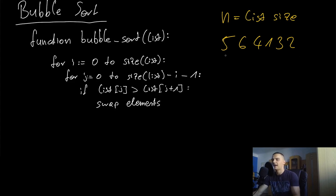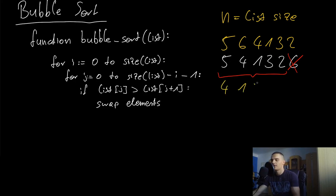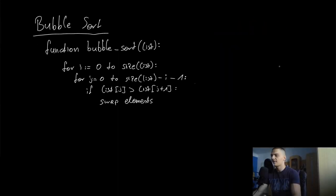Walking through the first iteration on [5, 6, 4, 1, 3, 2]: we compare six to four, swap; six to one, swap; six to three, swap; six to two, swap — ending with [5, 4, 1, 3, 2, 6]. Now i is two, six is sorted and ignored. Next iteration: five and four swap, giving [4, 1, 3, 2, 5, 6]. We repeat n times until the list is fully sorted.